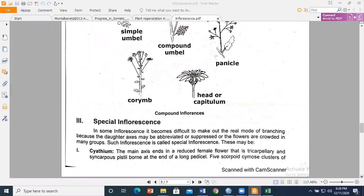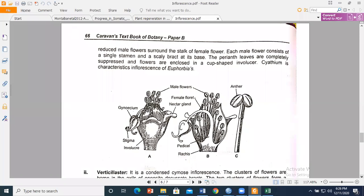The female flower is a reduced flower surrounded by five petaloid structures. These are cymose clusters of reduced male flowers surrounding the stalk of the female flower. The male flower consists of a single stamen with a scaly bract. There are no sepals or petals. The perianth leaves are completely suppressed. Both types of flowers are enclosed in a cup-shaped involucre.